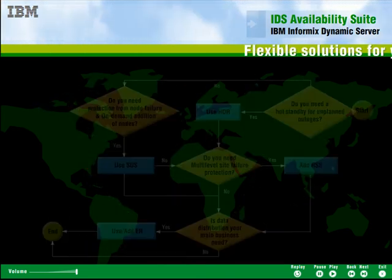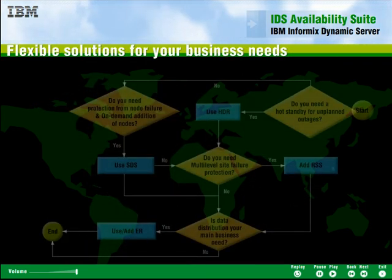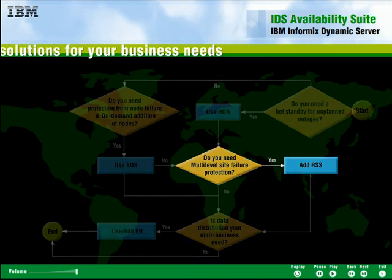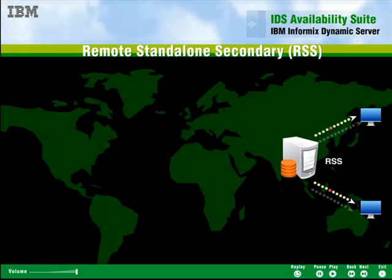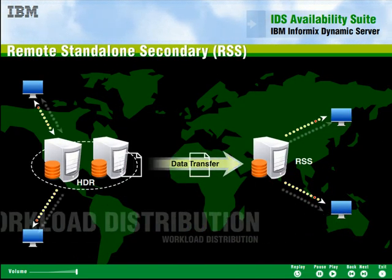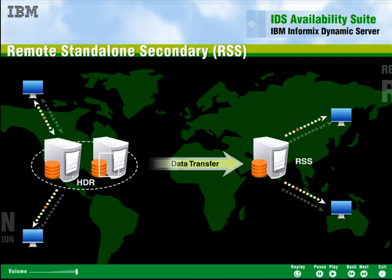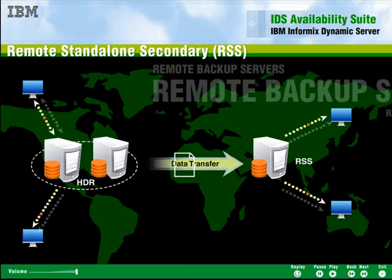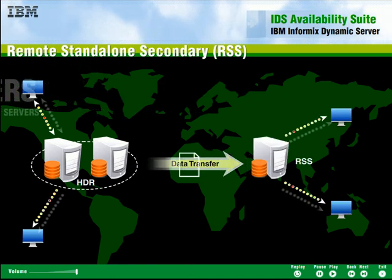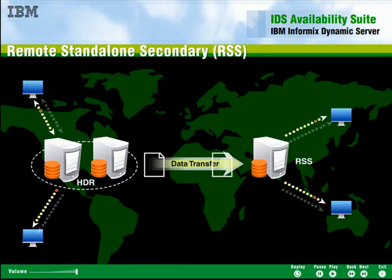If you want to maintain a full copy of data at another location anywhere in the world, the remote standby secondary, or RSS, option provides an additional level of failure protection. The remote standalone secondary server extends HDR functionality and is a complete replica of the primary server. Multiple local or remote backup servers can be set up with RSS to increase disaster recovery solutions.